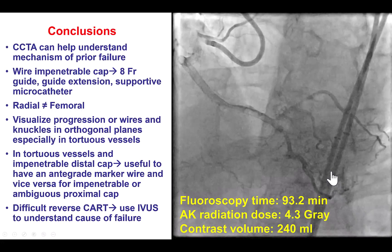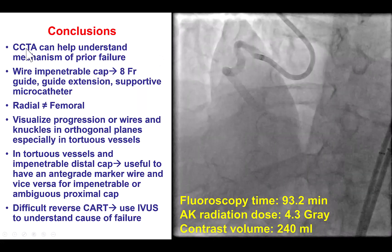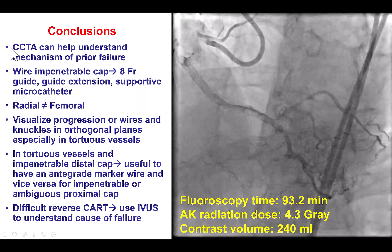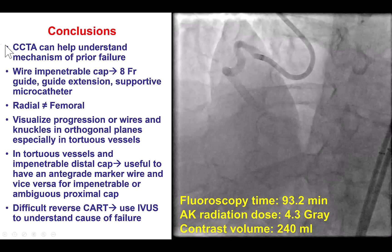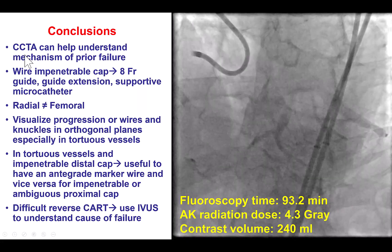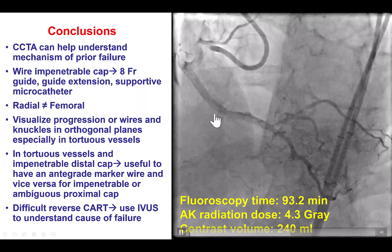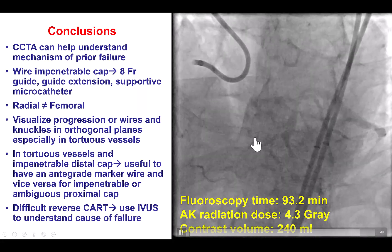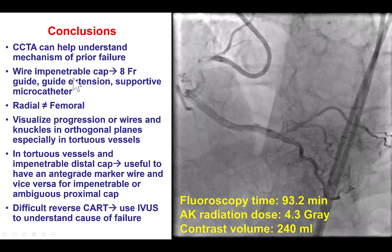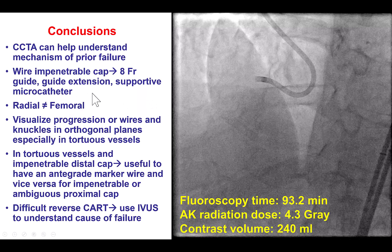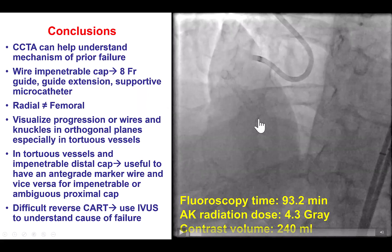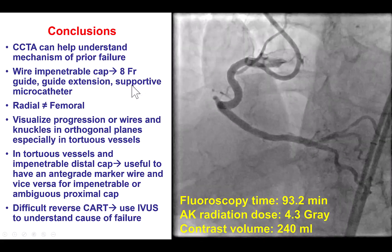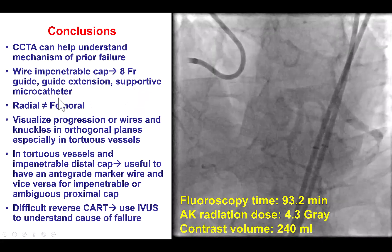Multiple lessons from this case. First, the first attempt can be unsuccessful and we need to be cautious not to give excessive contrast and radiation — 91 minutes of fluoroscopy is a fairly long time. Second, coronary CTA can help with planning, especially after prior failure. In our case, it helped us understand that the entry into the occlusion from the proximal cap was tapered, so what we thought was a bridging collateral was not necessarily that, and helped us start antegrade, which was critical for success. We also had a wire-impenetrable distal cap, which required a guide extension on the retrograde guide, a supportive Turnpike LP microcatheter, multiple stiff-tip guide wires, and femoral axis for support.